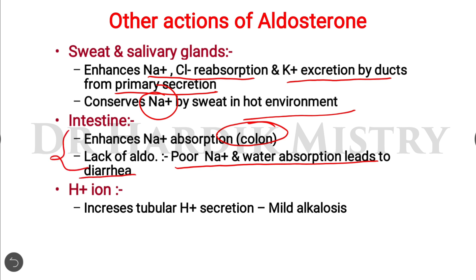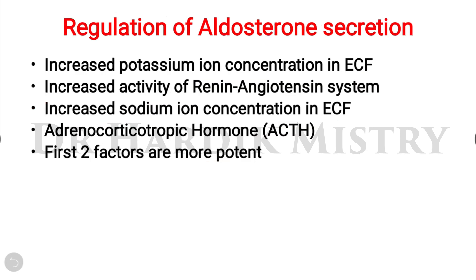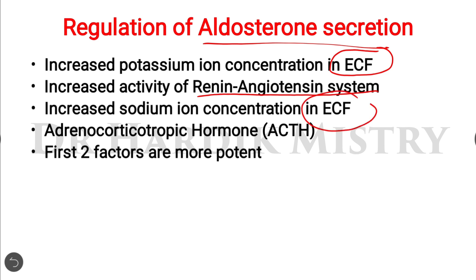Aldosterone increases tubular H+ secretion, causing mild alkalosis due to loss of hydrogen ions in urine. Factors regulating aldosterone secretion include: increased potassium ion concentration in extracellular fluid (stimulates aldosterone release); increased activity of the renin-angiotensin system (also stimulates release); increased sodium ion concentration in extracellular fluid (decreases aldosterone release); and ACTH from the anterior pituitary (also stimulates). The first two factors — hyperkalemia and renin-angiotensin activity — are the most potent regulators.